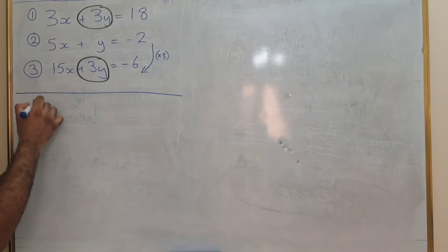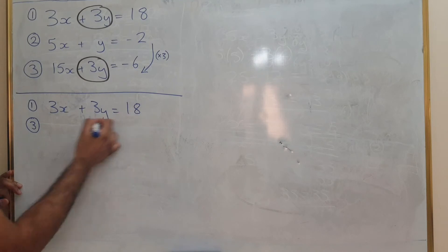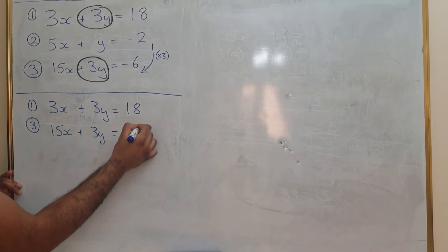I'm just going to redo that again. It's going to be equation 1 and equation 3 this time. So 3x plus 3y equals 18 and 15x plus 3y equals negative 6.